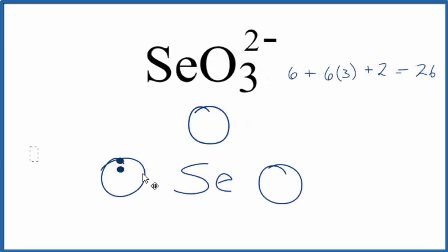Next, we'll put electrons between the atoms. This will form the chemical bonds. Then we complete the octets on the outer atoms. So now we've used 24 valence electrons, but we have 26. So let's just put our last two right here on the central atom to complete the octet.